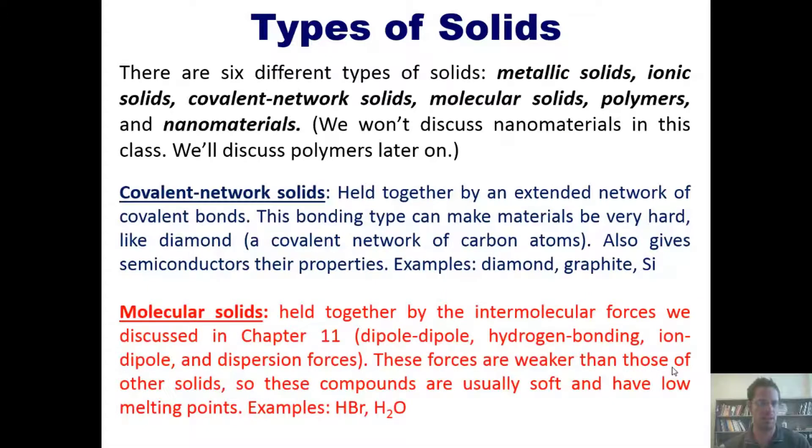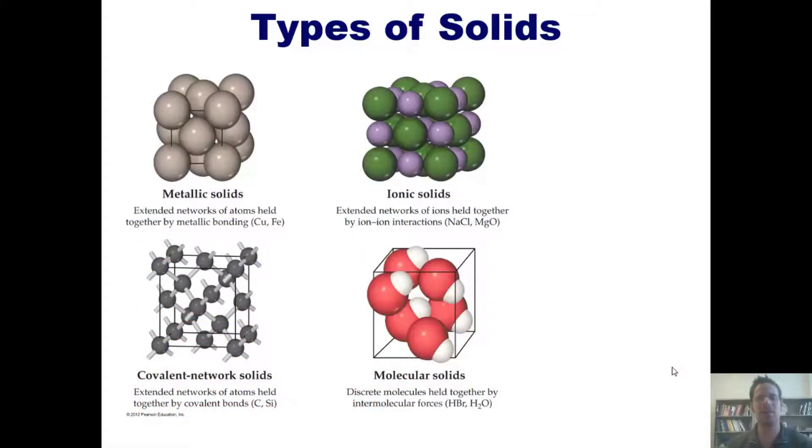Lastly, we'll talk about molecular solids, which are held together by intermolecular forces that we discussed back in Chapter 11. These forces are weaker than those of other solids, so these compounds usually are soft and have low melting points when compared to those of other solids. Examples include HBr and H2O.